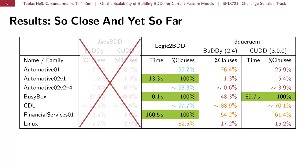Looking at the remainder of the results, we find that it is very peculiar that Logic2BDD came very close, apparently, to concluding the computation for Automotive 1 and the Automotive 2 versions 2 to 4, and also to the CDL feature models. This raises two questions. Why is Logic2BDD so much better than our prototype? And the other question is, how much more time do we have to invest to close the gap from 99.7% completion to 100% completion?